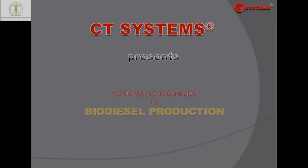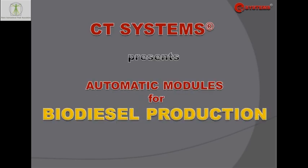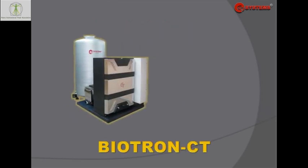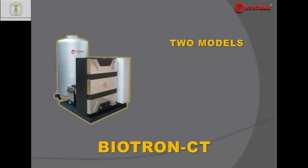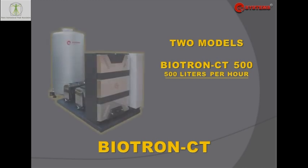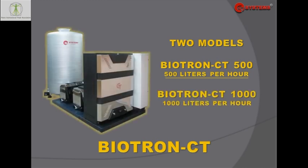PETA presents Biotron CT System automatic modules for biodiesel production. Biotron is available in two modules: Biotron 500 for the production of 500 liters per hour and the Biotron 1000 for the production of 1000 liters per hour.